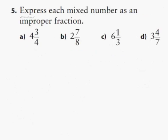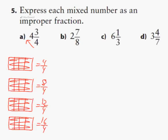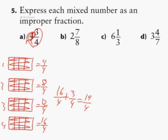Question 5: express each mixed number as an improper fraction. So 4 and 3 quarters — the easiest way is to use an algorithm. Since we're dealing with quarters, 1 would be 4 quarters. 4 wholes would actually be 16 quarters. So 16 quarters plus an additional 3 quarters is 19 quarters. The answer as an improper fraction is 19 quarters.